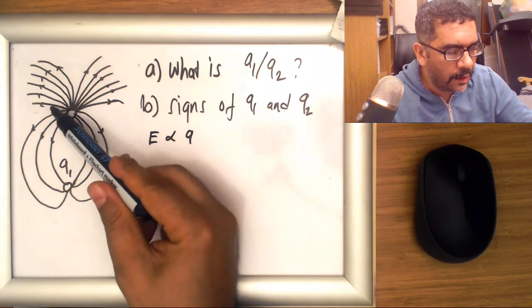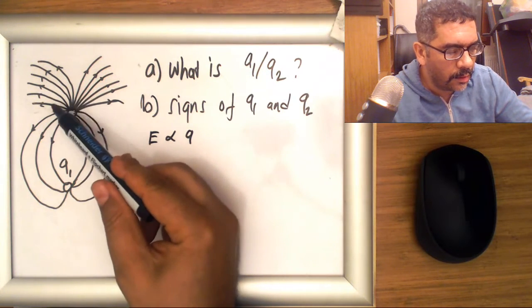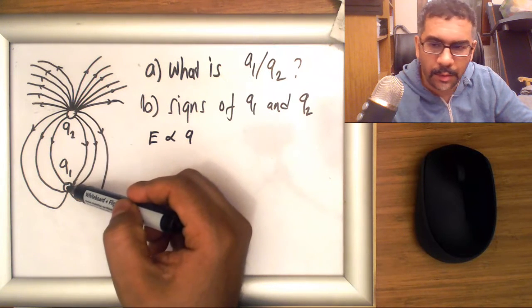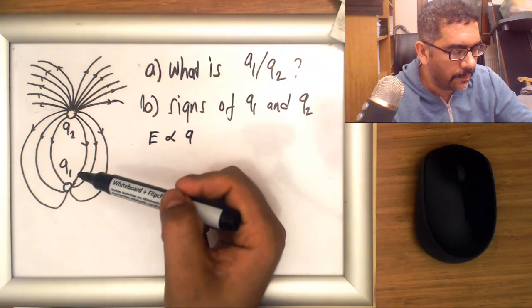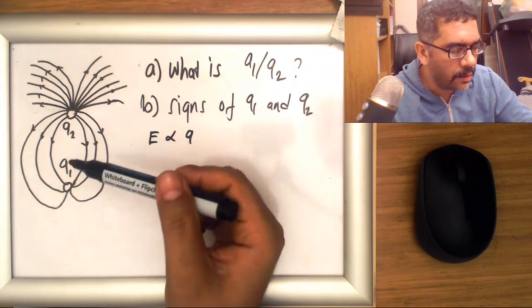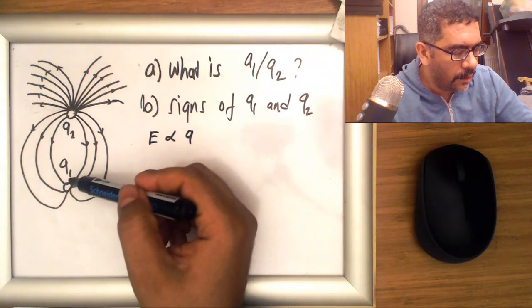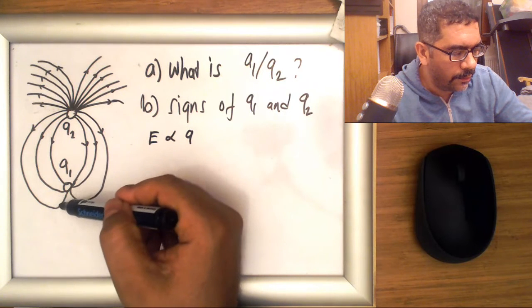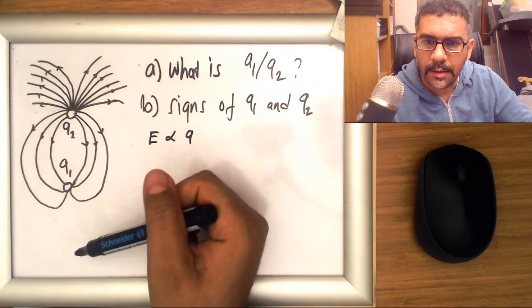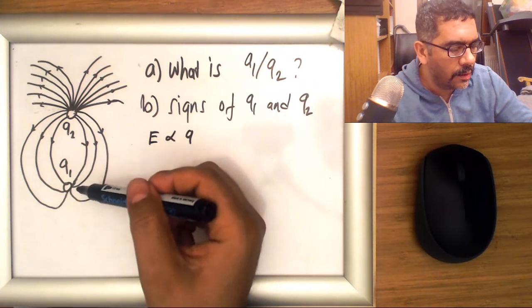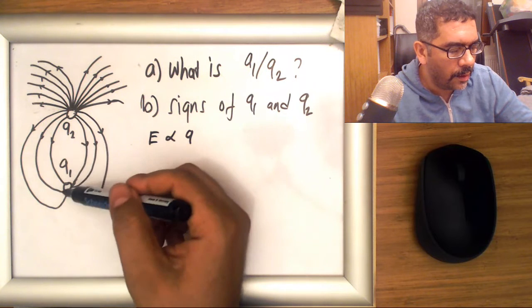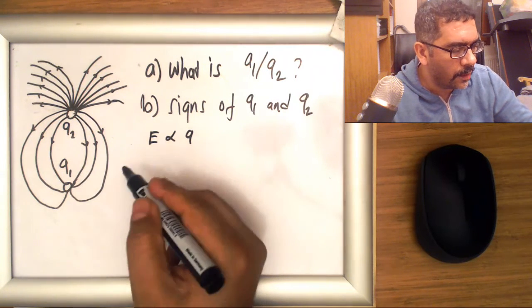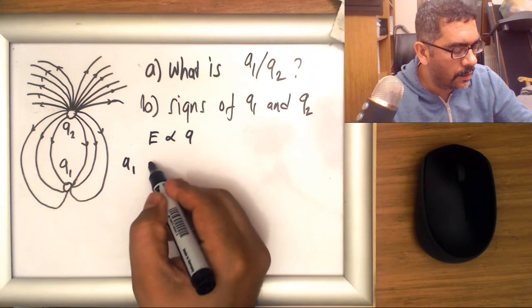that the electric field lines are denser around charge q2 compared to charge q1. Let's count these lines. The field lines around q1: one, two, three, four, five, six—so a total of six field lines are going into q1.